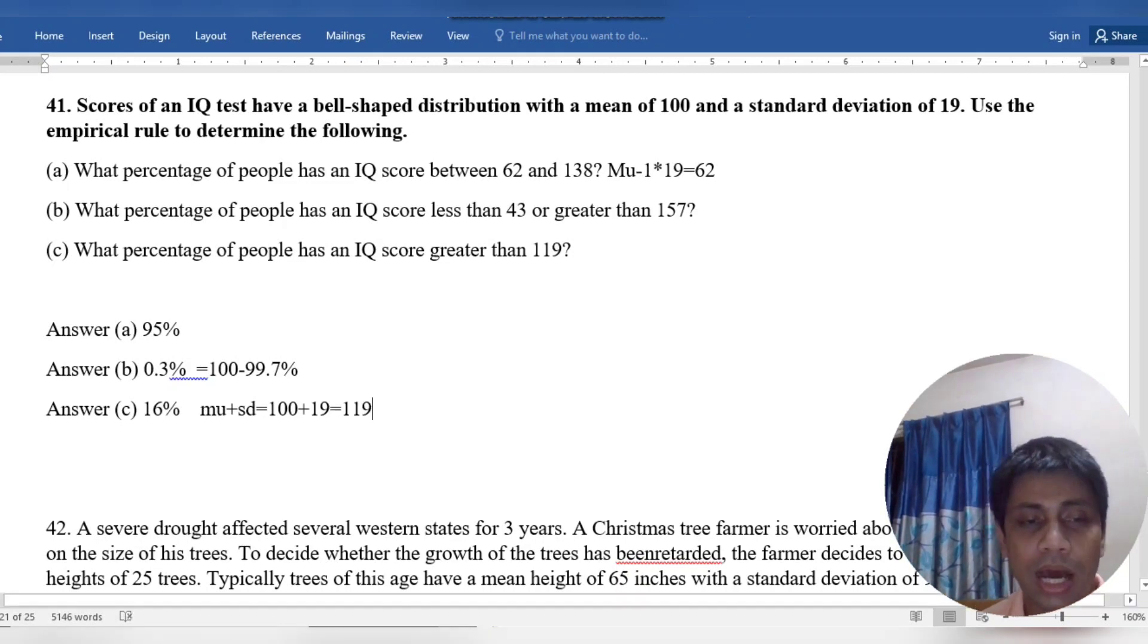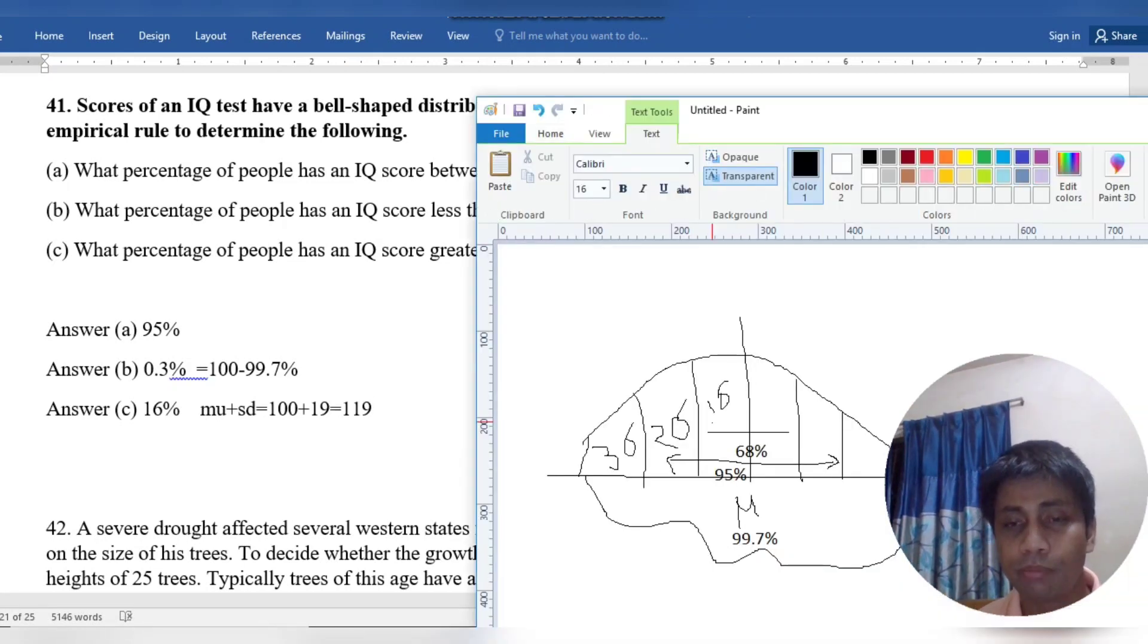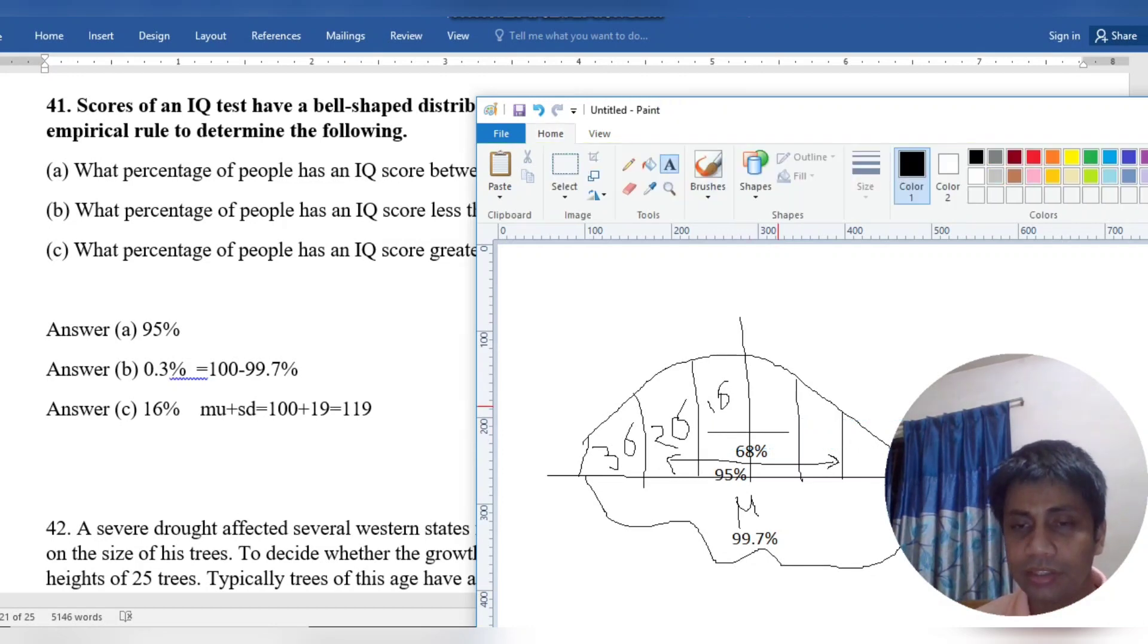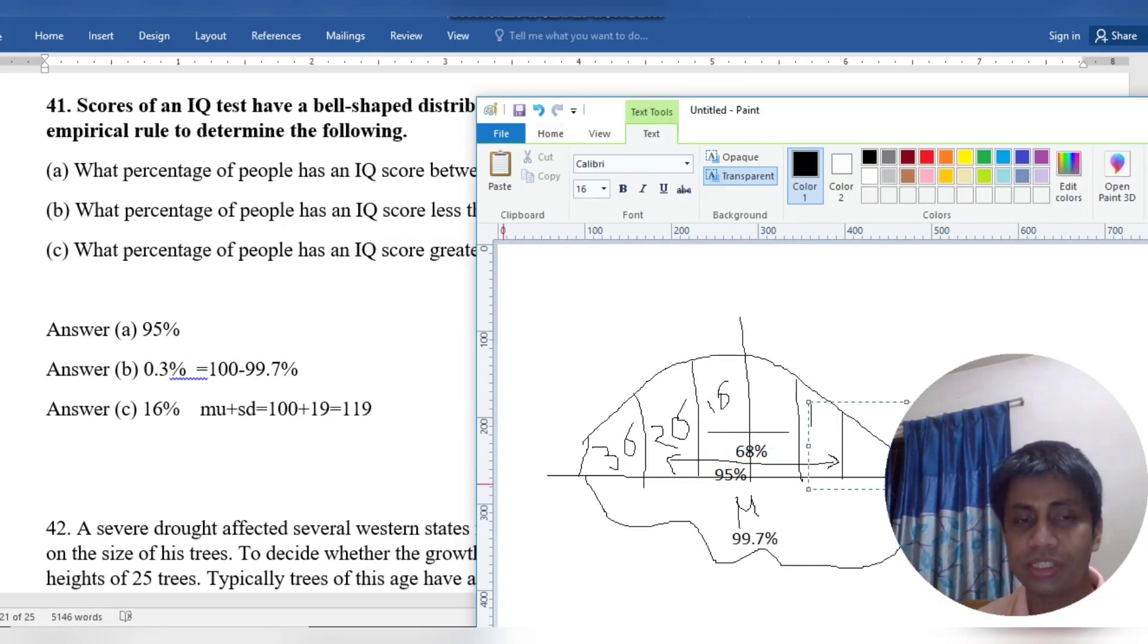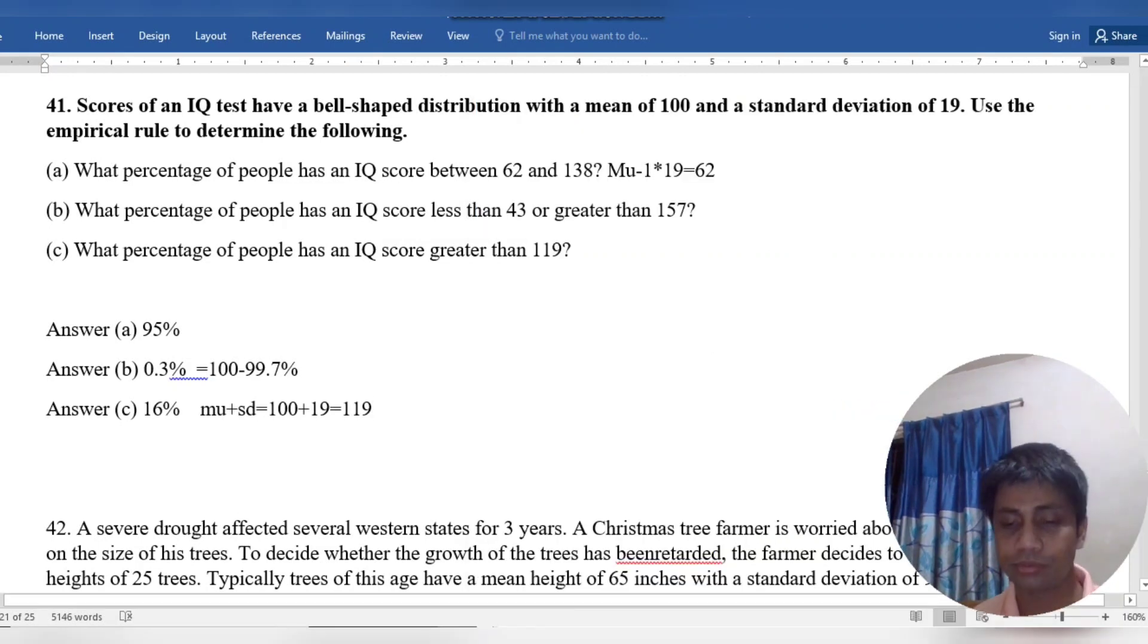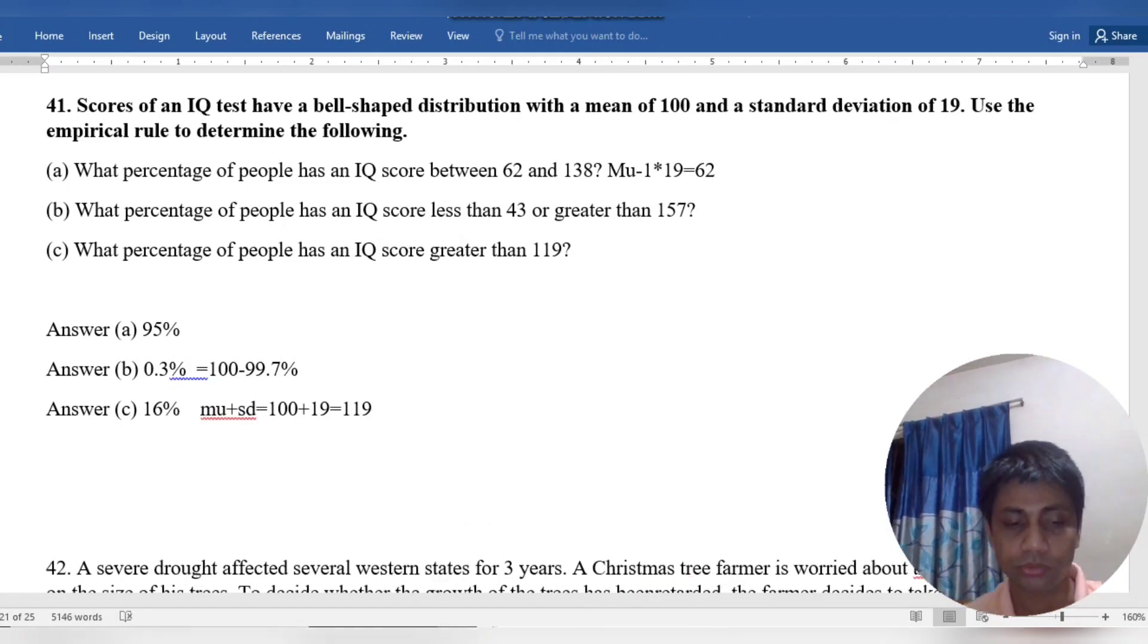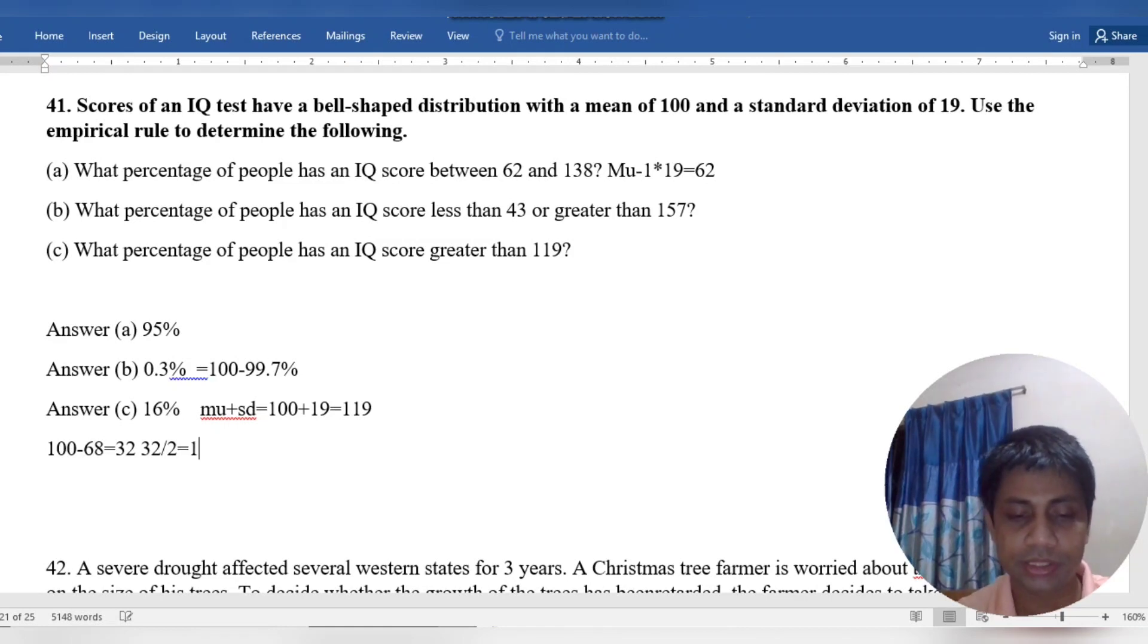So it's upper 119 here. The whole shape falls in 68 percent, then upper this portion. So 1 minus 68, that means 100 minus 68 equals 32, then 32 divided by 2 equals 16 percent.